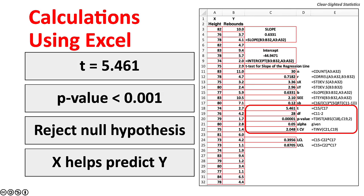With a t-value of 5.461 and a p-value less than 0.001, the null hypothesis is rejected. Conclusion: the independent variable predicts the dependent variable.